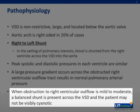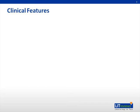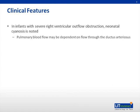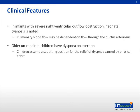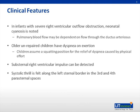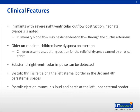Clinical features vary according to the age of the patient. In infants with severe right ventricular outflow obstruction, neonatal cyanosis is noted and pulmonary blood flow may be dependent on flow through the ductus arteriosus. Older unrepaired children have dyspnea on exertion and assume a squatting position for relief, which increases blood flow to the right ventricle. A substernal right ventricular impulse can be detected. A systolic thrill is felt along the left sternal border in the third and fourth parasternal spaces. The systolic ejection murmur is loud and harsh at the left upper sternal border, but can become less prominent with severe obstruction, especially during a hypercyanotic spell.